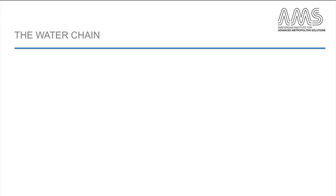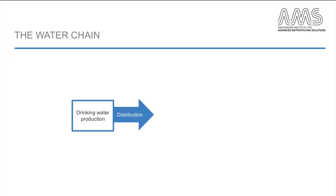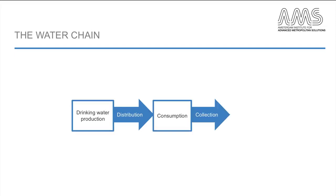It entails the infrastructure for the production, distribution and consumption of drinking water, as well as for the collection, treatment and discharge of wastewater. It is very context-specific what this water chain looks like, as we will see this week.